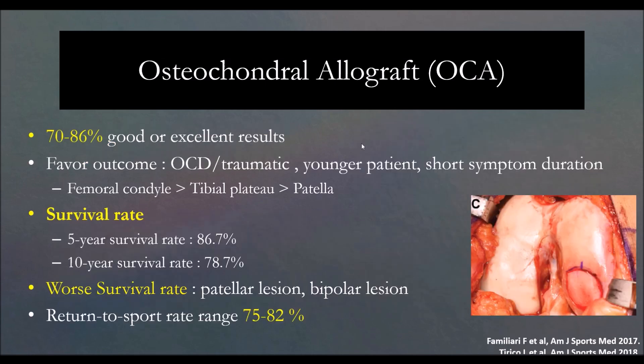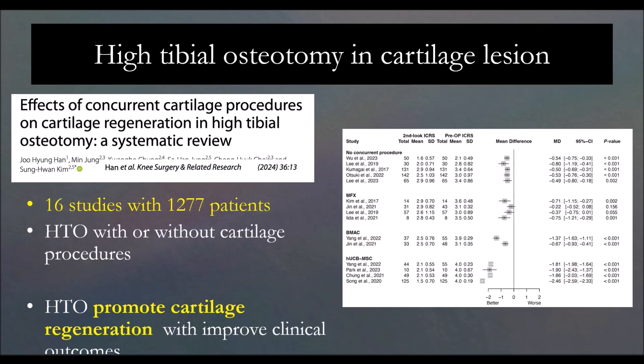The outcome of osteochondral allograft: survival at five years is 86% and at ten years is 78%. I always add a high tibial osteotomy (HTO) if the patient has axis deviation and also a bipolar lesion, to unload the compartment — cartilage surgery alone is not enough if the patient has too much load.